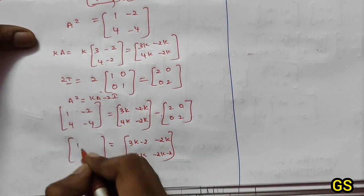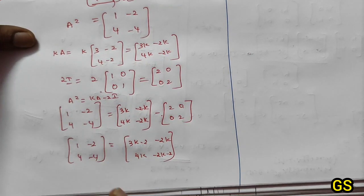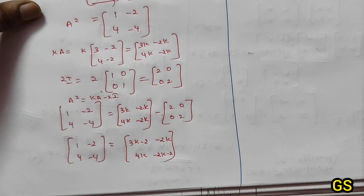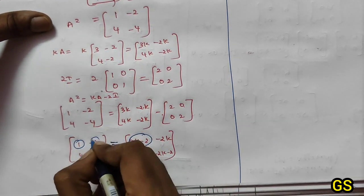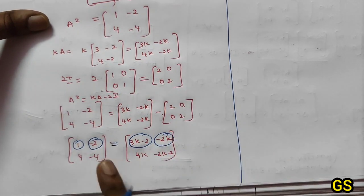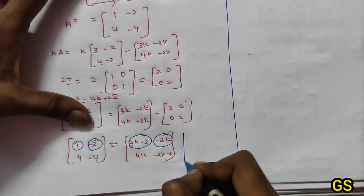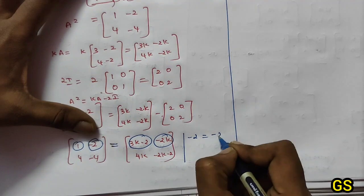So [1, -2; 4, -4] equals this matrix kA minus 2. Corresponding elements are equal. First term equals first term, second term equals second term. So -2 equals -2k.